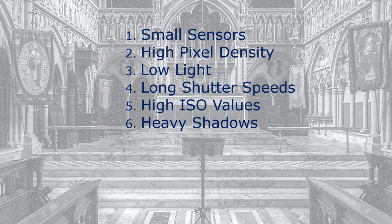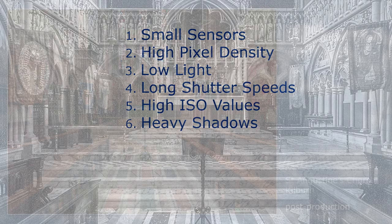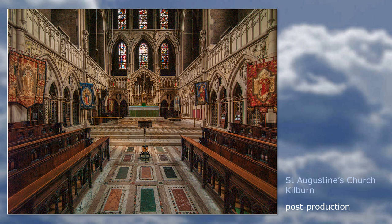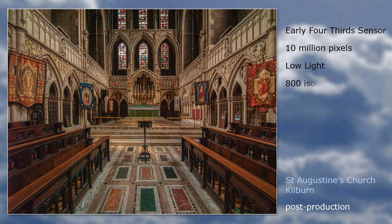The image of St Augustine's had a number of these characteristics. It was shot on an early four-thirds sensor — taken in 2007 — with 10 million pixels. Low light, of course; the ISO was bumped up to 800, but the shutter speed was still a fifteenth of a second.